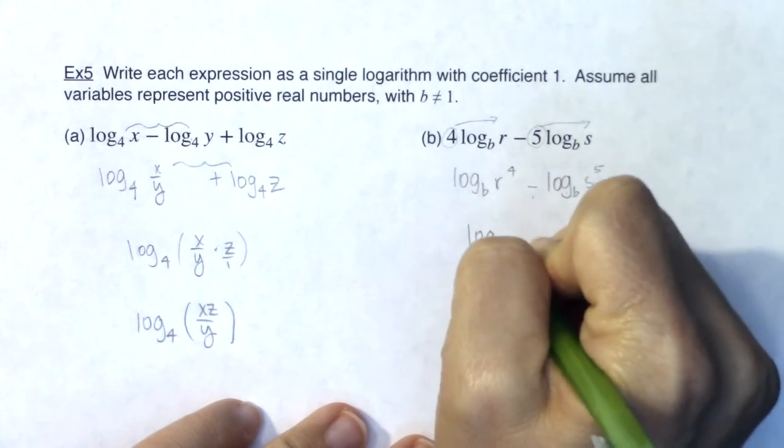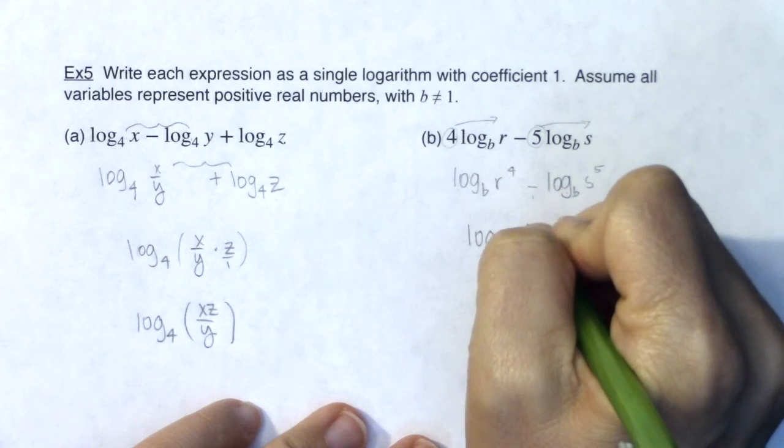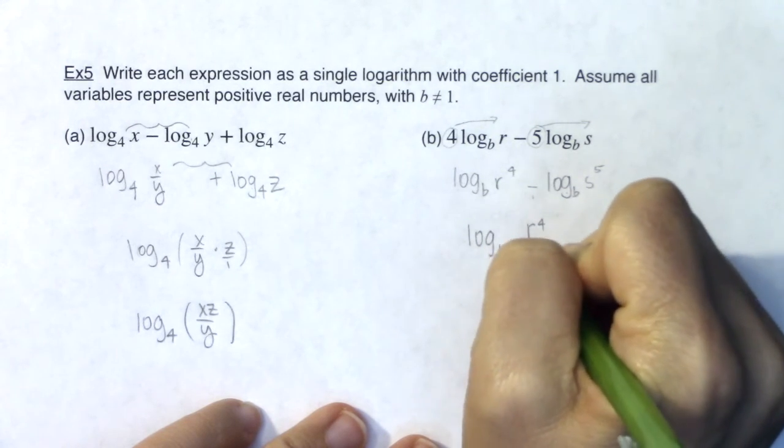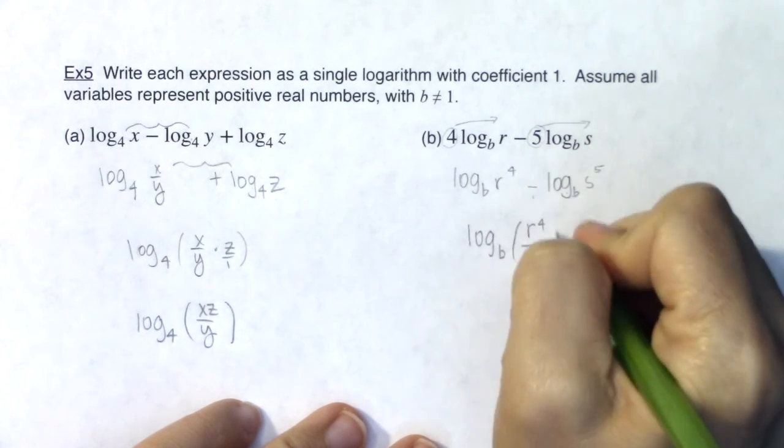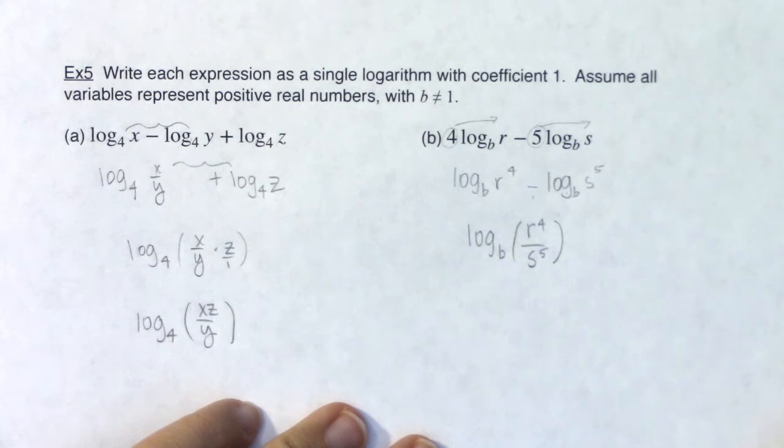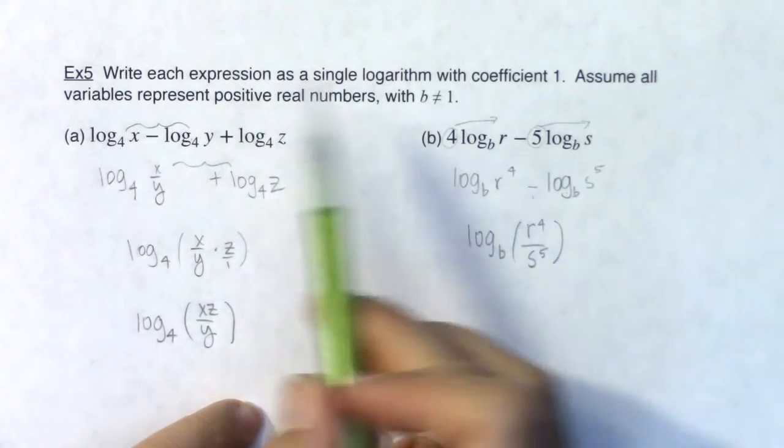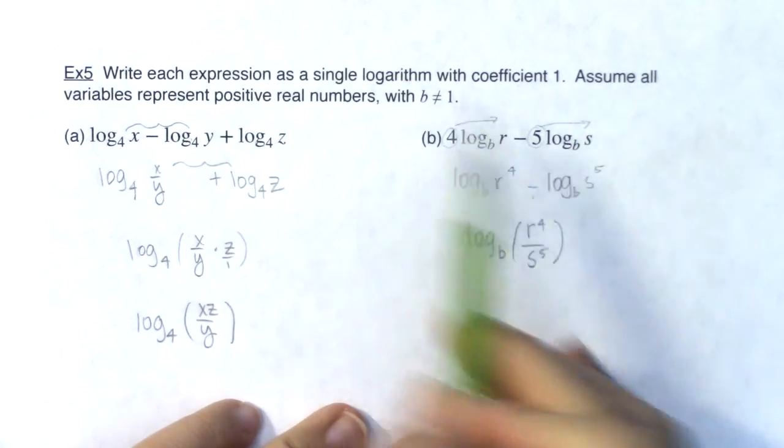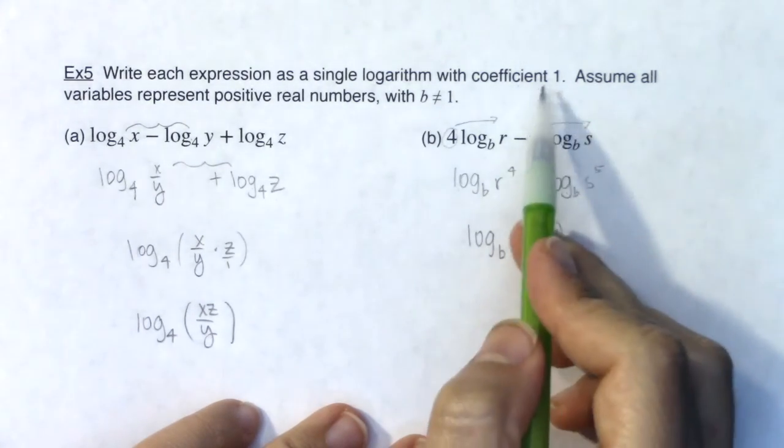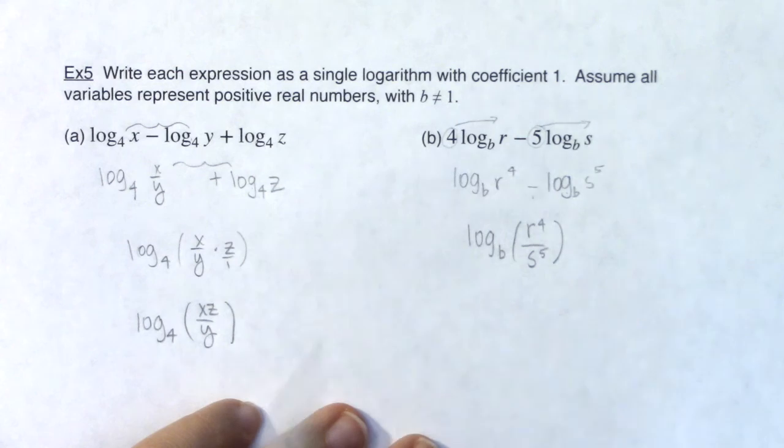And so I can collapse this or simplify this into one logarithm, but now the argument is going to be a quotient. And again, if you want to, you can put parentheses around that argument. And I've done what the direction said. I have a single logarithm here, and the coefficient in front of it would be a secret one. So I've solved that problem.